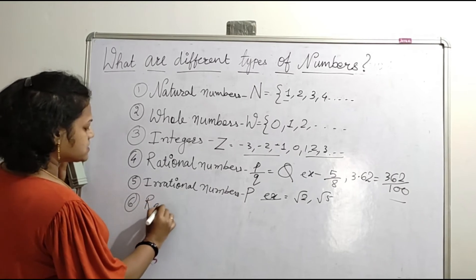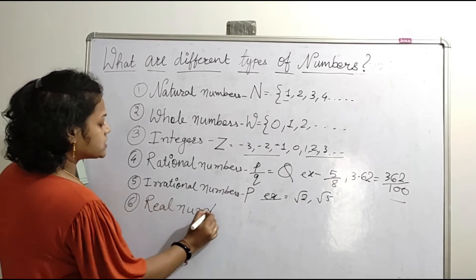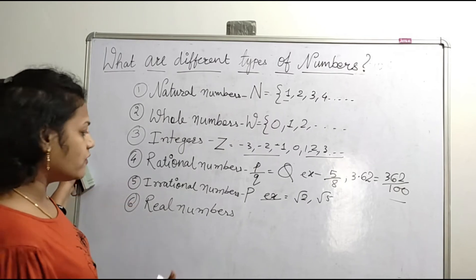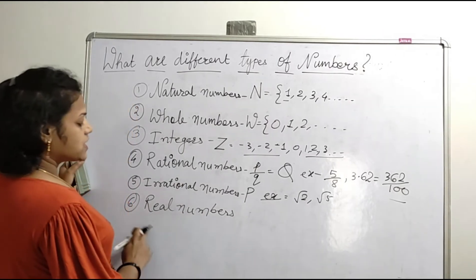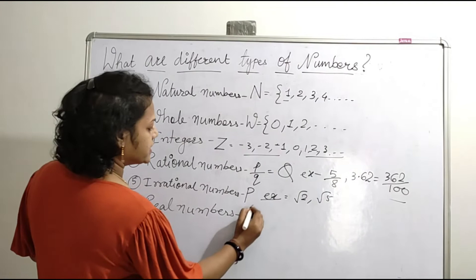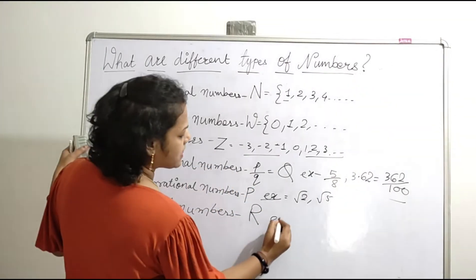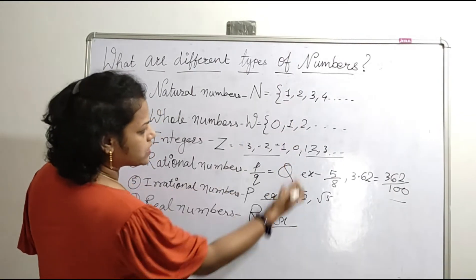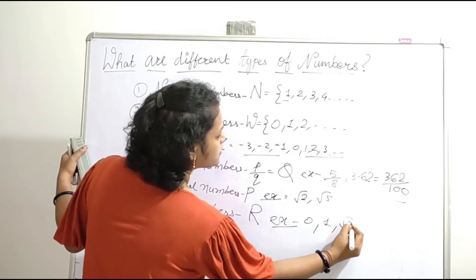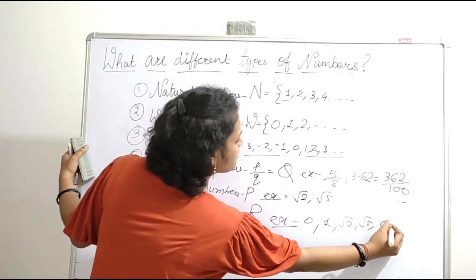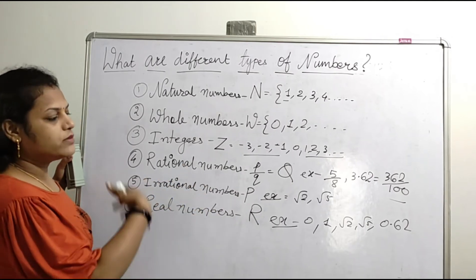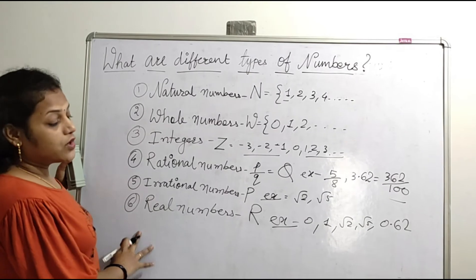Next, we will see real numbers. Real numbers are those which contain all positive numbers, fraction form, and decimal form — they include all types of numbers. Real numbers are denoted by capital R. For example, 0, 1, root 2, root 5, and 0.62 are all real numbers. Real numbers include all types of numbers: fraction form, decimal form, and so on.